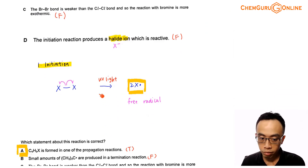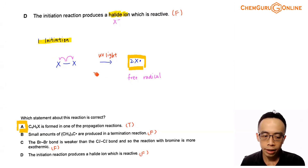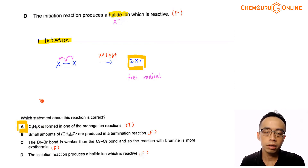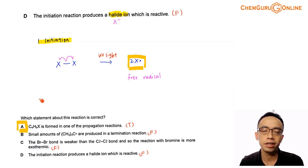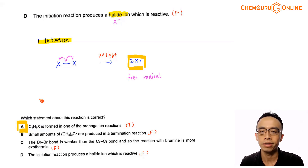We have run through all options A, B, C, and D. The correct answer is option A — in one of the propagation steps, C4H9X is formed. That was the discussion for this question targeting free radical substitution for alkanes. If you found this video useful, please give it a thumbs up, like, and subscribe to my YouTube channel for more weekly video lessons. That's all for now — see you next week.